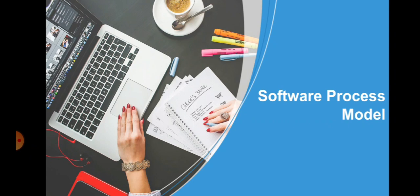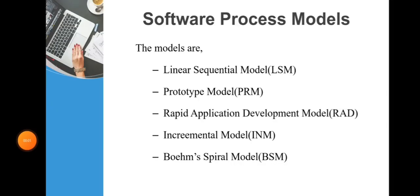Today in this video we are going to see about five Software Process Models. The five main important Software Process Models we are going to see today are Linear Sequential Model, Prototype Model, Rapid Application Development Model, Incremental Model, and Boehm's Spiral Model. All these five models are used to develop a software product.